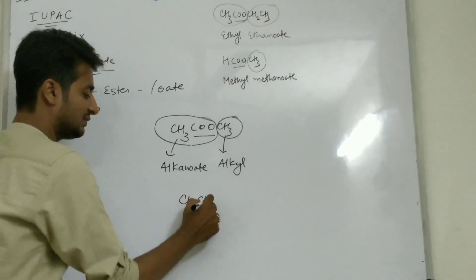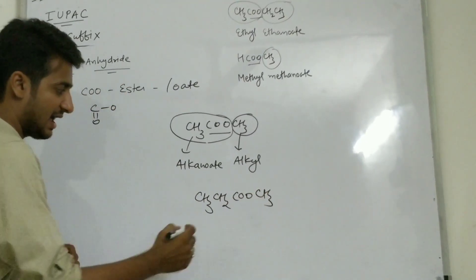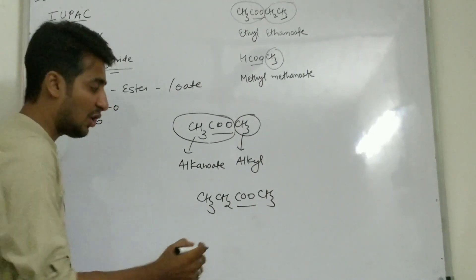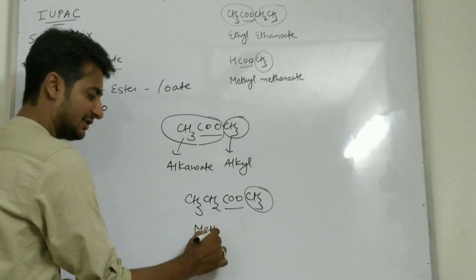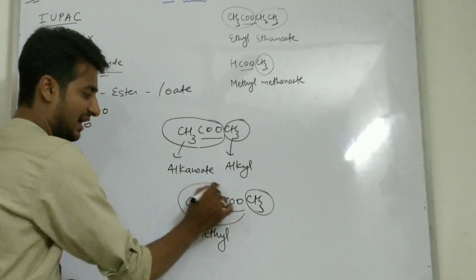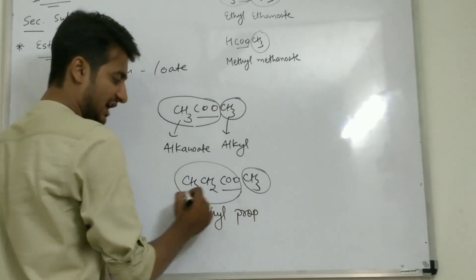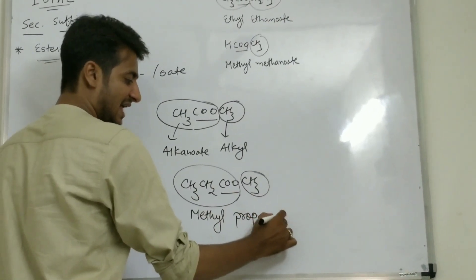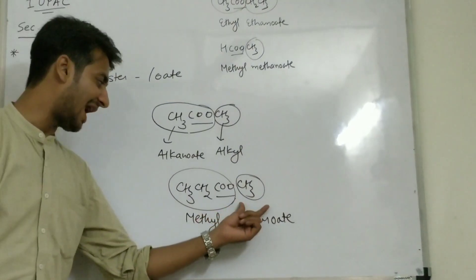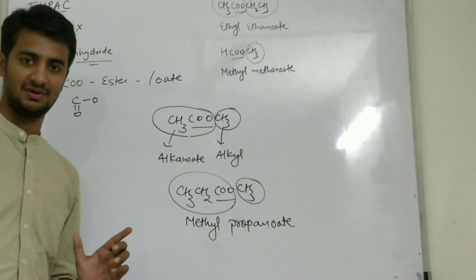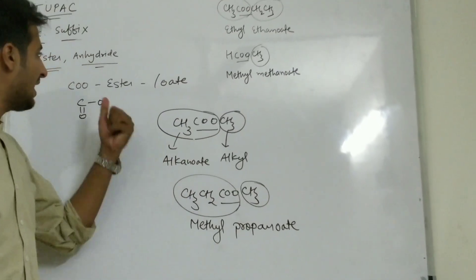What will be the name of this compound: CH3 — CH2 — C double O — O — CH3? Here C double O is there. On the right side, one carbon is there, so for one carbon we write 'methyl'. Here on the left side how many carbons are there? Three carbons — three carbons means 'prop', all single bonds so '-an', and the suffix is '-oate'. The name of this compound will be methyl propanoate. Always remember this technique for ester compounds.